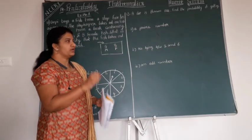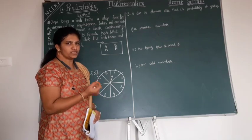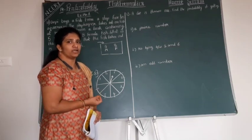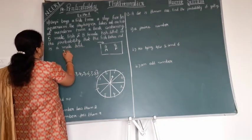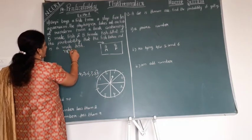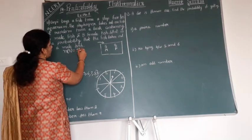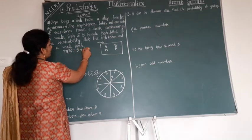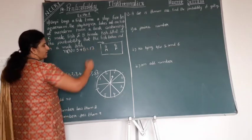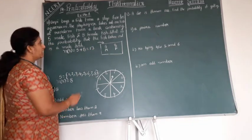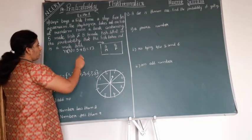First of all, we have to write the total number of fishes. What is the total number of fishes? In probability, what is the name we call here? Sample spaces. So here, total number of fishes, that is N of S, is equal to number of male fishes 5 plus number of female fishes 8. 5 plus 8 will be 13 fishes. There are 13 fishes in your aquarium box.